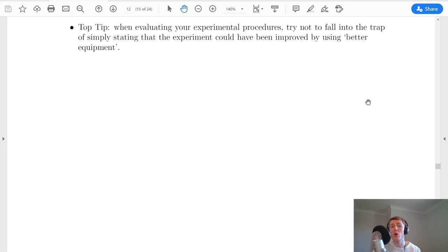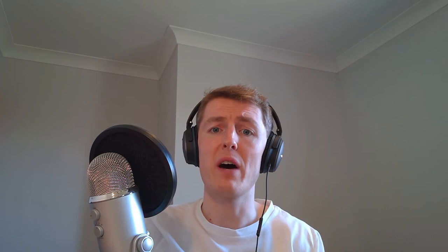And just to leave you with a top tip, if you're doing your project and you're evaluating your experimental procedures or your methods, try not to fall into the trap of simply stating that the experiment could have been improved by using better equipment. If you're talking about the equipment, you need to be specific, you need to talk about what could be done better, what equipment you could have used, and so on. That's it from this video guys, I hope you found value in it. If you did, give it one of these and make sure you subscribe and I'll catch you in the next one. Take care.